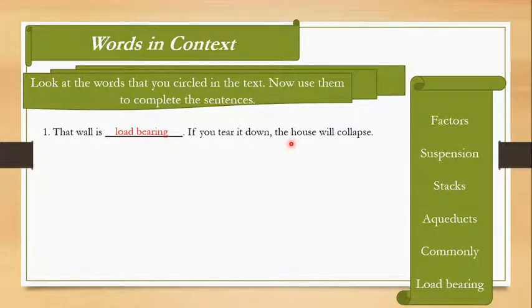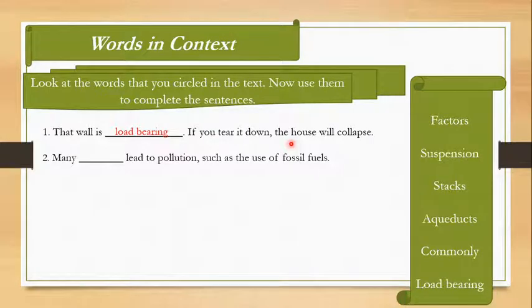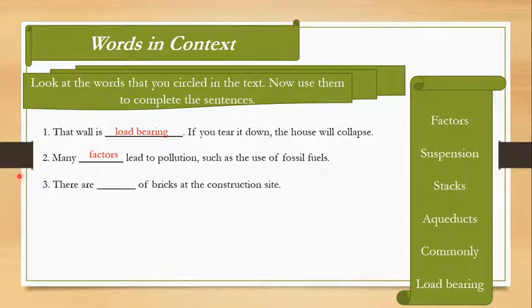The next is: many factors lead to pollution, such as the use of fossil fuels. Many factors, which means many reasons, many things lead to pollution, which is, some of them is, use of fossil fuel. The third: there are stacks of bricks at the construction site. This is very plain and simple. Stacks—you know what stacks are, the neat pile of things. If you put brick on top of each other, five to six bricks, it becomes a stack.